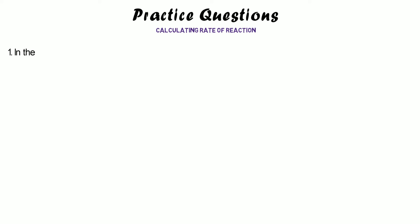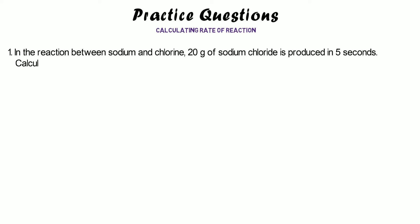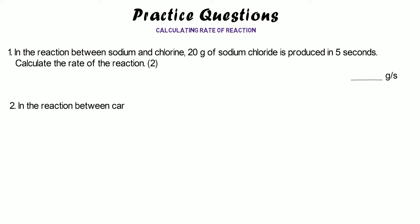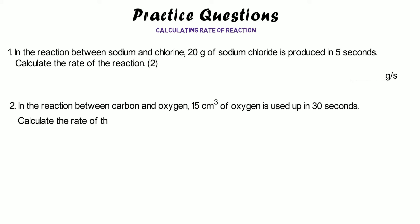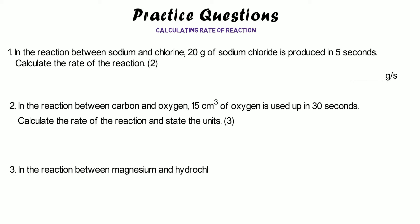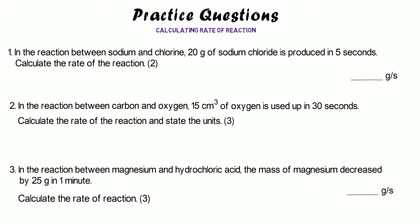Here are some practice questions. Number one: in the reaction between sodium and chlorine, 20 grams of sodium chloride is produced in 5 seconds — calculate the rate of reaction (units: grams per second). Number two: 15 centimetres cubed of oxygen is used up in 30 seconds — calculate the rate and state the units (3 marks). Number three: the mass of magnesium decreased by 25 grams in one minute — calculate the rate of reaction. Pause the video and have a go.